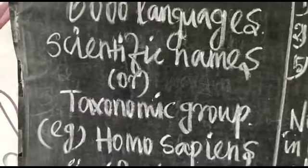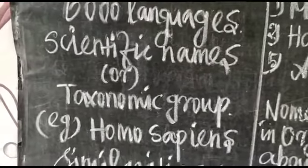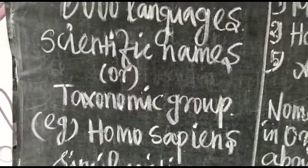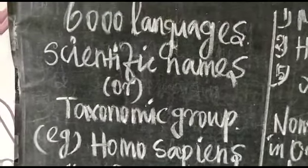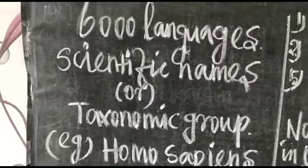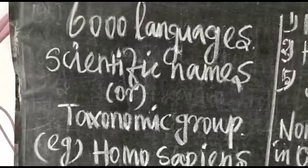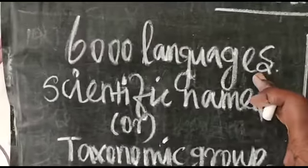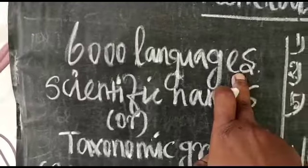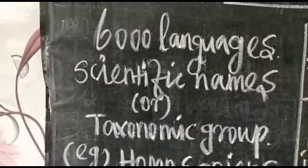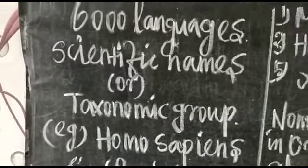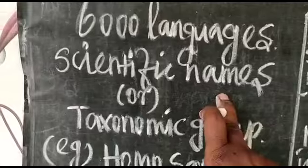Unfortunately, it is impossible for anyone to have a good functioning knowledge of most languages. We know about languages like English, Tamil, Hindi, Marathi, Telugu, and Italian — but there are more than six thousand languages. Hence, this arises a need for a universally accepted scientific name for animals.